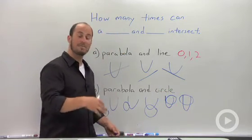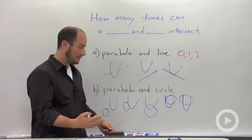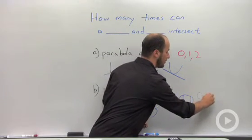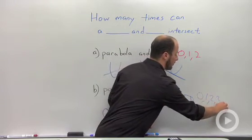So with a circle and a parabola, we have many different options of how many solutions we could have. We could have zero, one, two, three, or four.